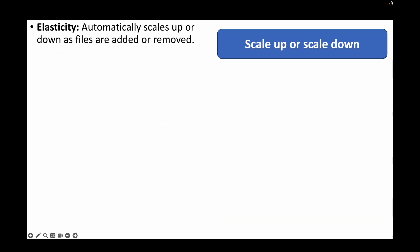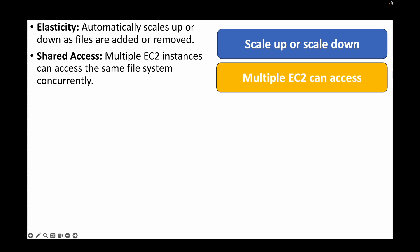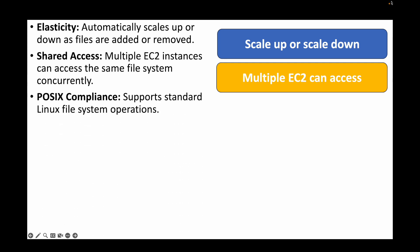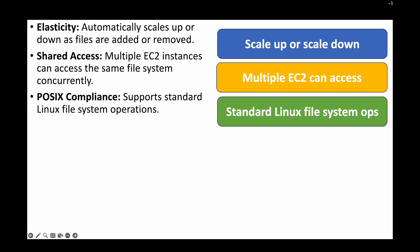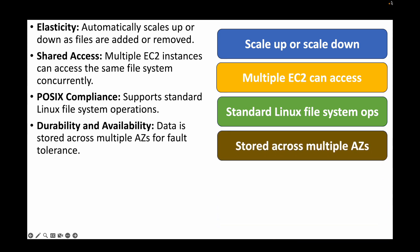The next question is: what are the key features of AWS EFS? First, it automatically scales up or down based on the files you're adding or removing, automatically increasing or decreasing capacity. Second, it provides shared access — you can share EFS volumes with multiple EC2 instances, and those instances can access the same file system concurrently. Third, POSIX compliance — it supports standard Linux file system operations.